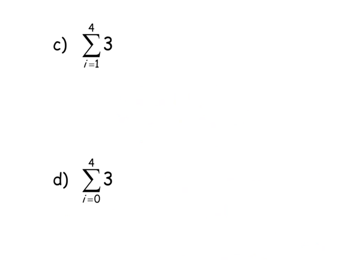Here you'll notice something strange - I've got the sum as i goes from 1 to 4 of 3. I don't even have an i in here. So what does that mean? It means there's no variable to plug in to, and so every single time I want to plug in a number it's always just going to be 3. When I plug in 1 for i, even